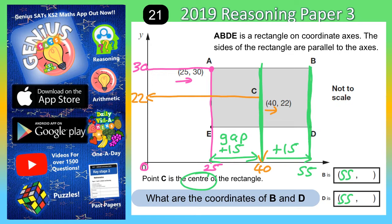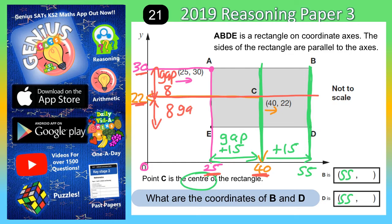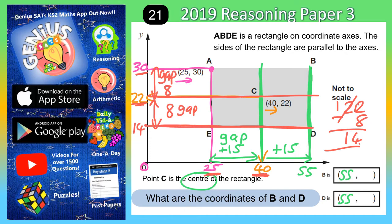Next, look at the vertical gap. We looked at the horizontal gap between 25 and 40; now let's look at the vertical gap between 30 and 22. That is a gap of 8, because 30 take away 8 is 22. Because C is the centre — a line of symmetry — there's another gap of 8 below 22. So 22 take away 8: 2 take 8 you can't do, so borrow; 12 take 8 is 4, and 1 take nothing is 1, giving us 14. So y = 14 is level with points E and D.